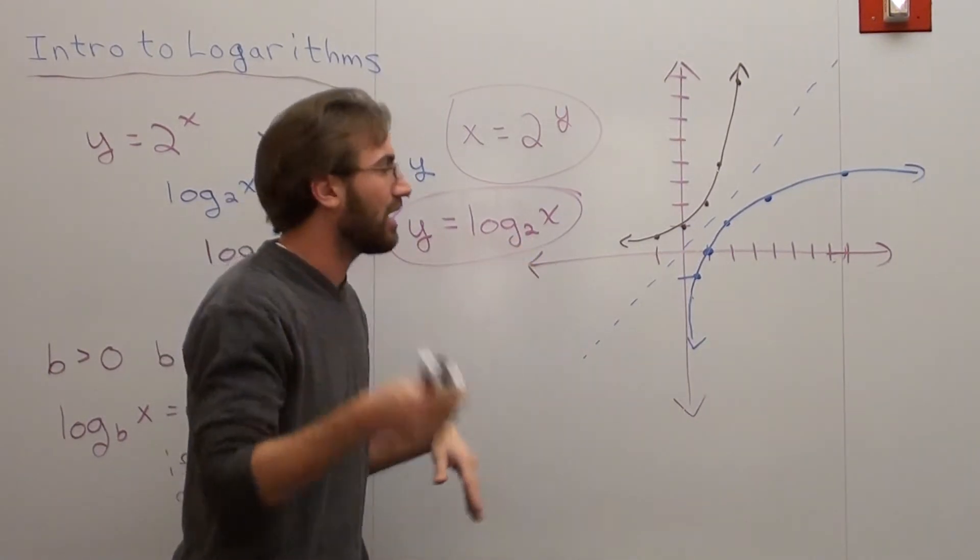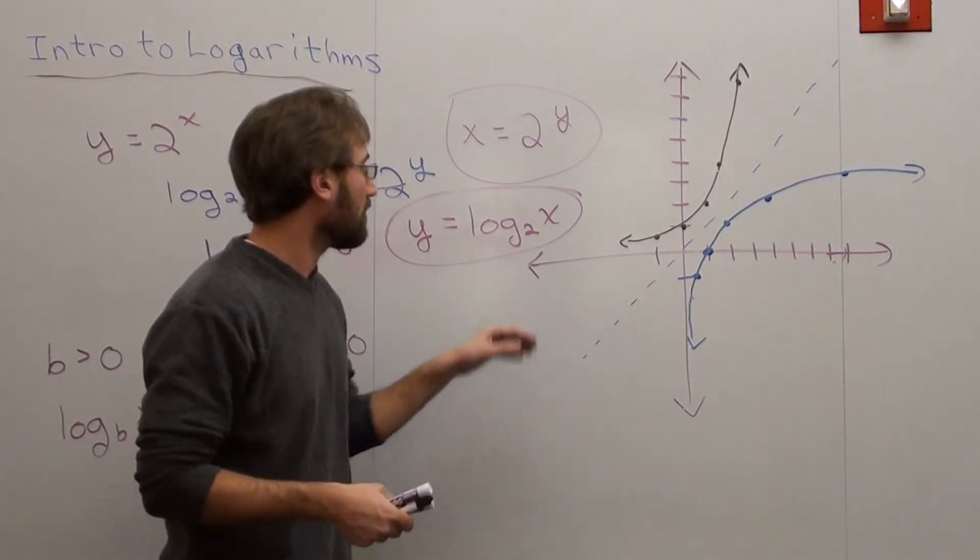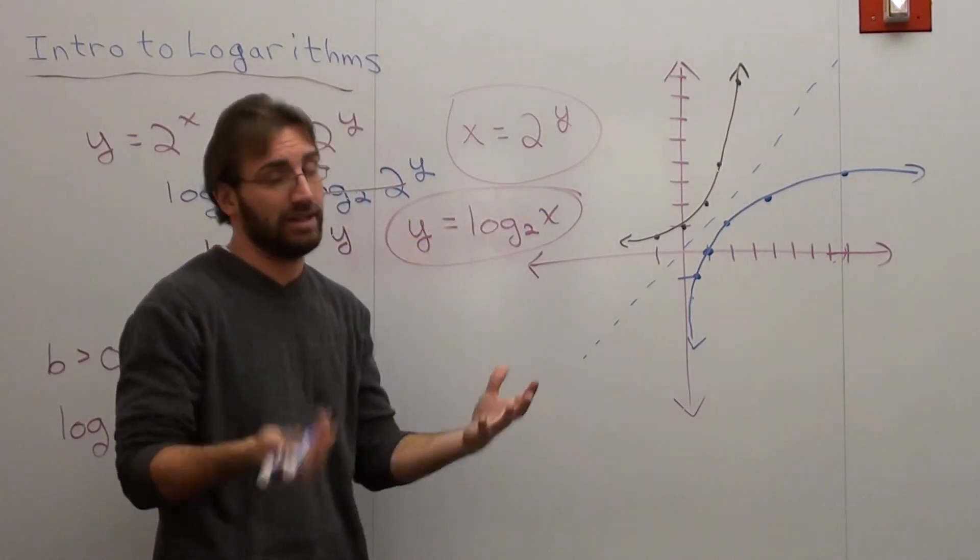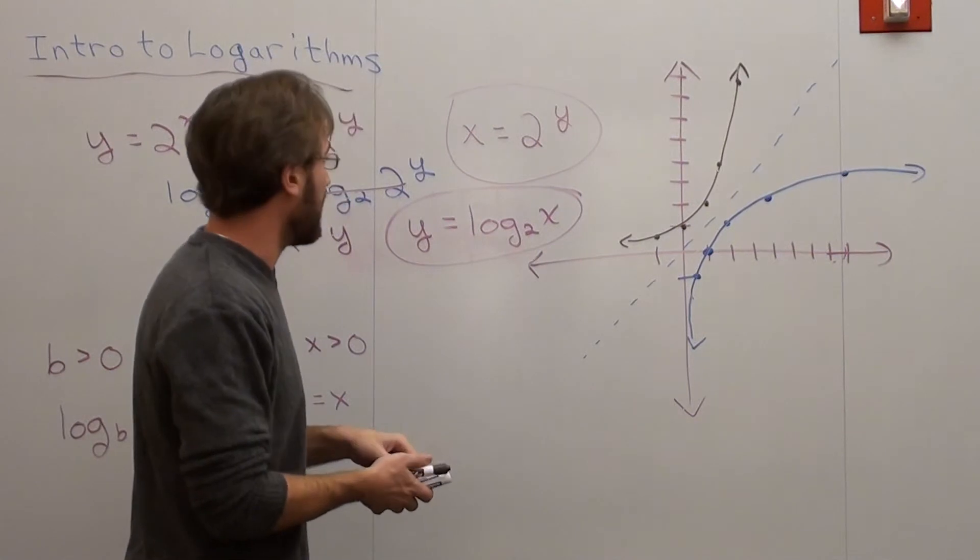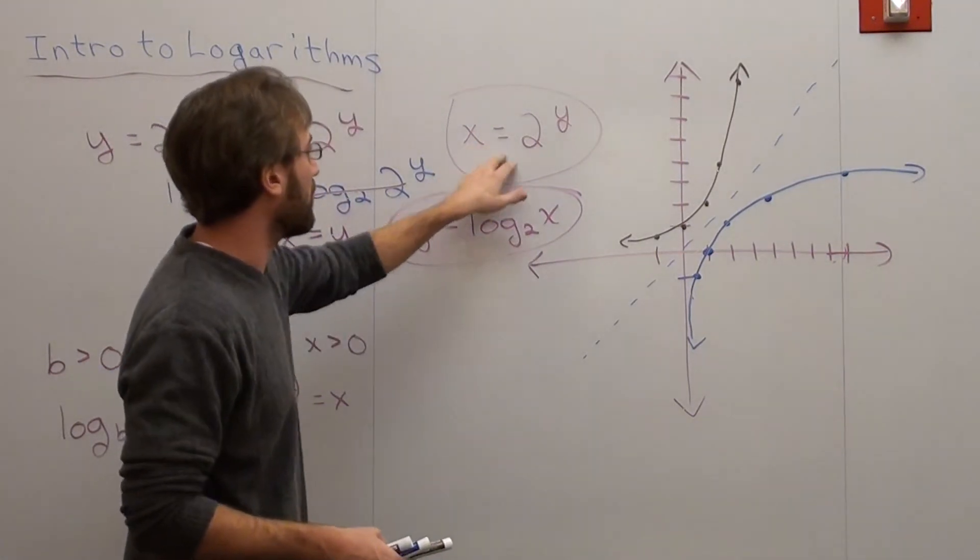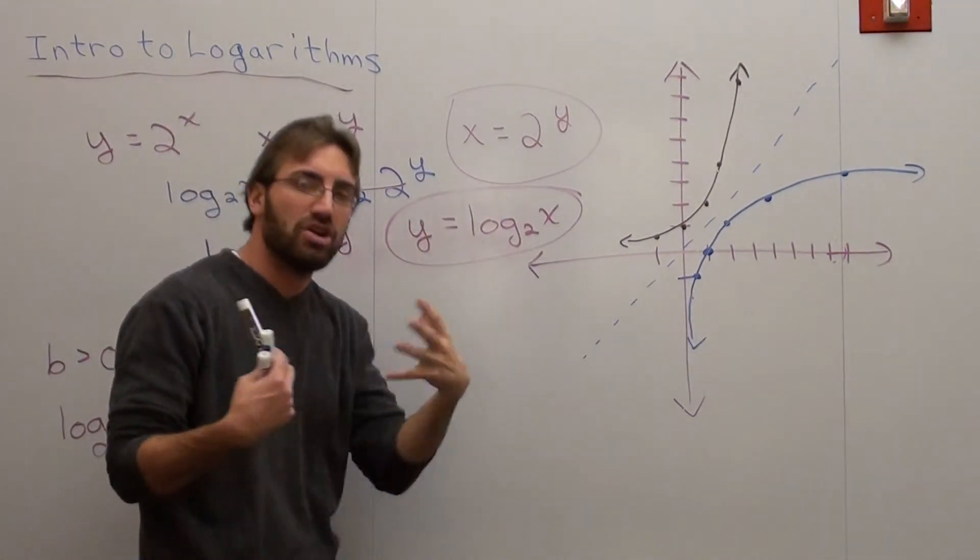So one last thing I kind of want to go over really quickly. This and this are the same, right? I've got to stress that. And a way to think about it is this. How do I rewrite this as this and vice versa? Here's the way I think about it.